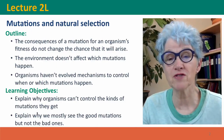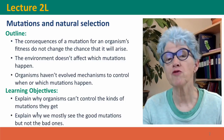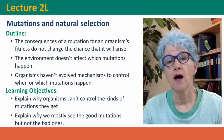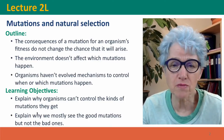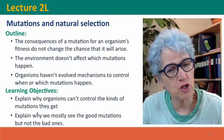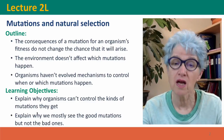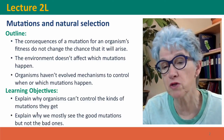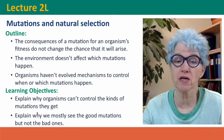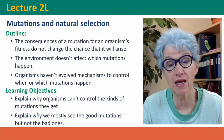Hi, everyone. Welcome back to Useful Genetics. This is lecture 2L. We're going to think about the relationship between mutations and natural selection. We'll talk about clearing up some misconceptions: that the chances a mutation will benefit an organism don't affect the chance that the mutation will arise, and that the environment doesn't affect which mutations arise.